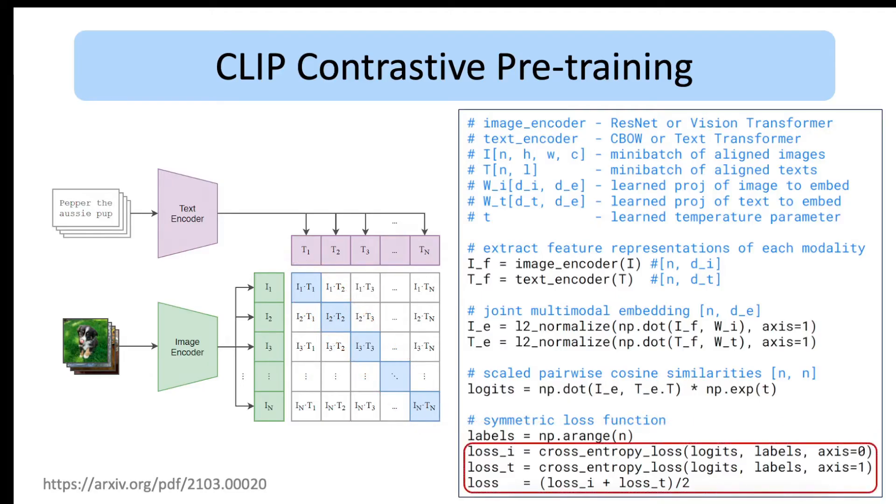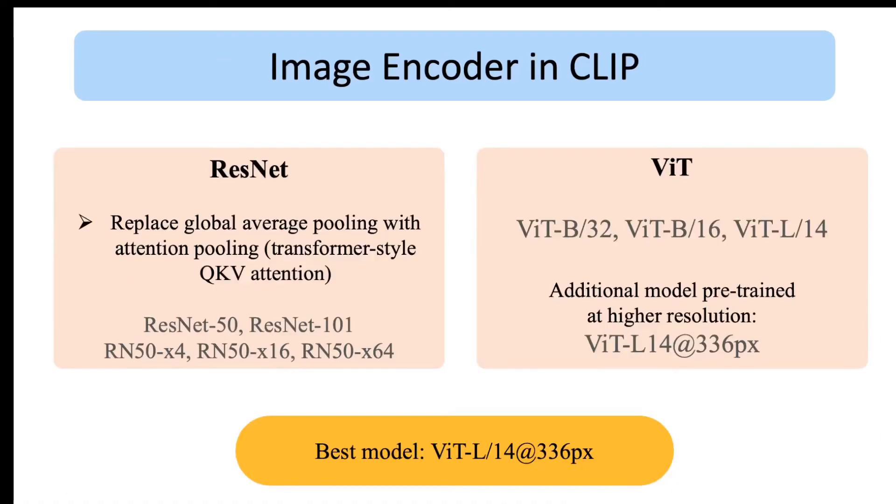Then we compute the cross-entropy loss on this matrix once for dimension 0 to get the loss for the visual encoder, and then on dimension 1 for the loss of the textual encoder. Finally, we take the average of these two losses. Now let's look at the architectural details of CLIP.